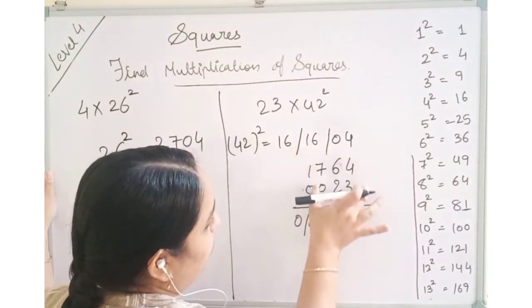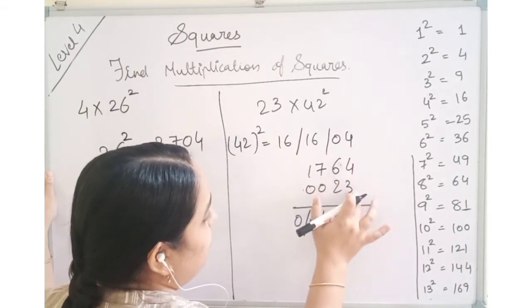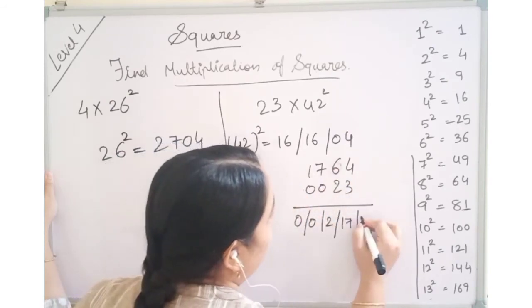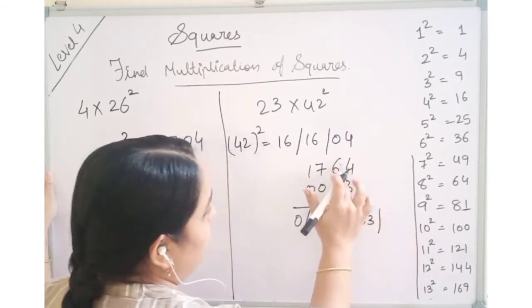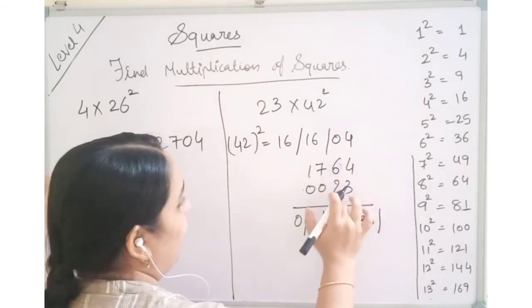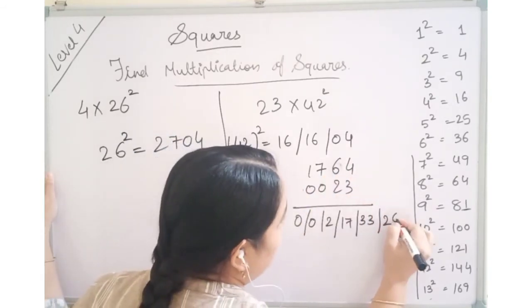Now forget about this and concentrate on this 3 digit. 7, 3's are 21 and 12 we will count. So 21 and 12 is 33. Now 6, 3's are 18. 4, 2's are 8. So 18 and 8 will give us 26.